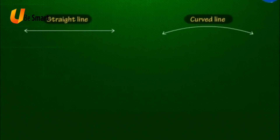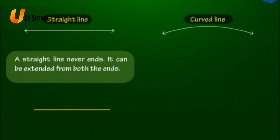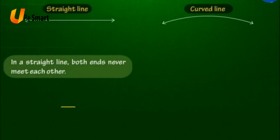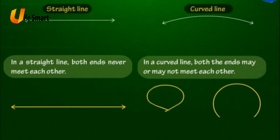Difference between a straight line and a curved line: A straight line never ends — it can be extended from both the ends. A curved line may or may not end; it may or may not be extended from both the ends. In a straight line, both ends never meet each other. In a curved line, both the ends may or may not meet each other.